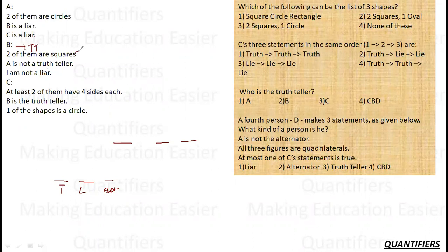Therefore B is the truth teller, and all statements B has made are true. Now let's see what B is saying. B says two of the three shapes are squares. So I know that out of the three shapes, two must be squares. I don't yet know what the third shape is.